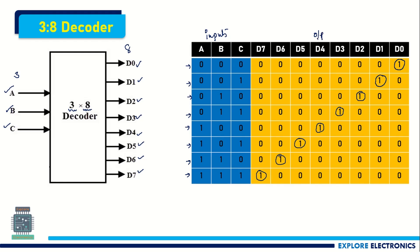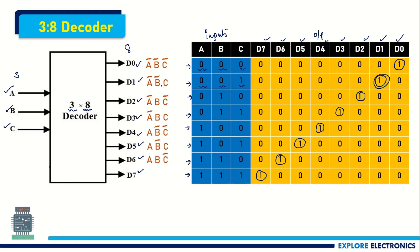For these outputs, if we write the expression for D0, D1, D2, D3, D4, D5, D6, D7: D0 is 1 when the input is 000, so we write it as Ā B̄ C̄. Similarly, the expression for D1 becomes Ā B̄ C, since D1 is 1 when the inputs are 001.